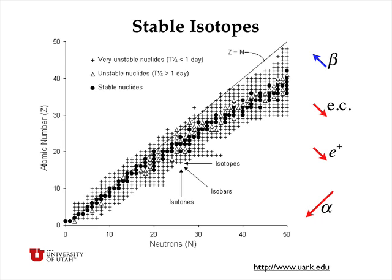The unstable nuclides are indicated by the crosses and the open triangles in this chart. If you have a nuclide which is below and to the right of this valley of stability, then a likely mode of decay is beta decay, because beta decay will raise the atomic number and lower the number of neutrons, so you move up and to the left on this chart toward the valley of stability.